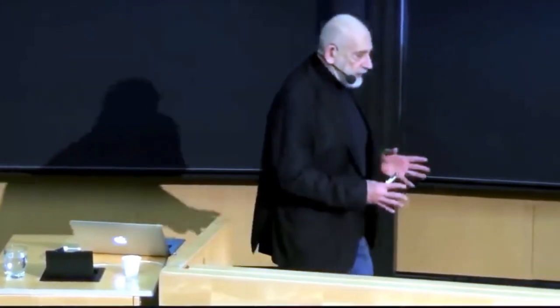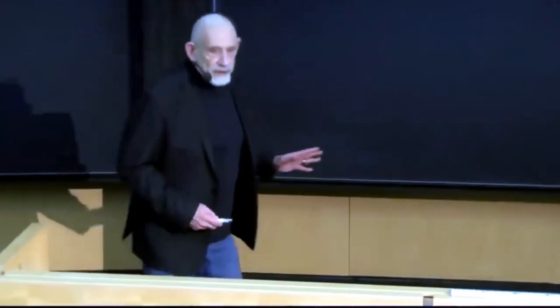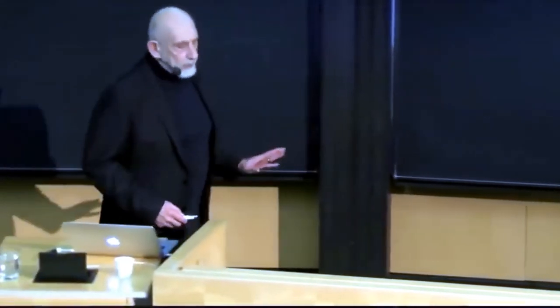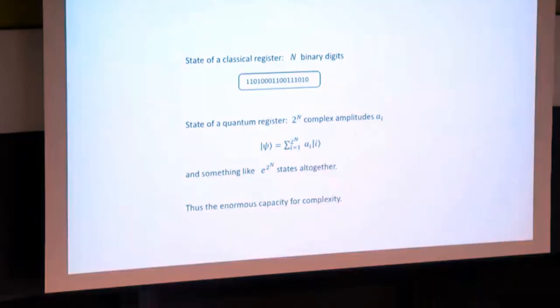Think of a computer. The state of a computer is described by the state of a bunch of bits. Zeros and ones. To describe the state of a register inside a computer or a memory, it's just described by a series of zeros and ones. A set of binary digits.